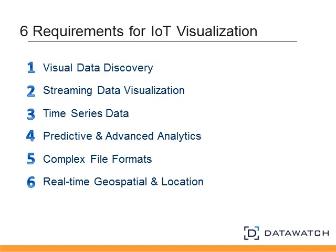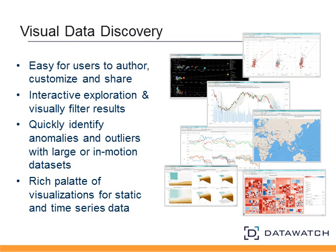I'm going to talk about six essential requirements as it relates to visualization and analysis of data from an Internet of Things implementation, with focus on industrial. The six include: visual data discovery, handling streaming data in motion, how to support time series data — which is the bulk of data coming from sensors — how to handle predictive and advanced analytics, how to handle complex file formats from a wide variety of sources, and finally real-time geospatial and location analytics. These are the six essential requirements, and I'll walk through each one quickly.